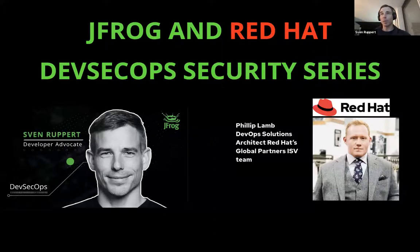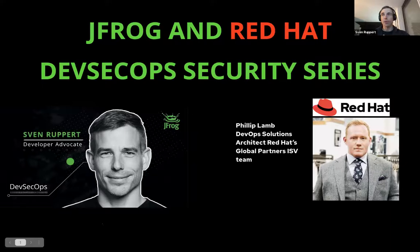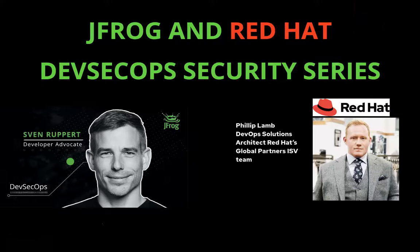My name is Sven Ruppert. I'm developer advocate at JFrog, and I'm specialized in DevSecOps. My history is more or less from consulting worldwide in the Java ecosystem. I think we could start, and I'm giving back to Philip.